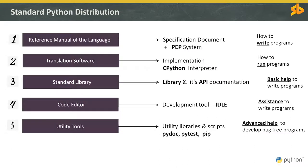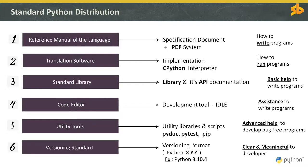This is the standard Python distribution provided by the Python Software Foundation, also referred to as the core Python distribution. Note that python.org hosts only this standard Python distribution. If you are not happy with what you get from the standard distribution, you can also look for alternatives. For instance, if you are not happy with just the standard implementation — that is the CPython interpreter — you can replace it with an alternative implementation.